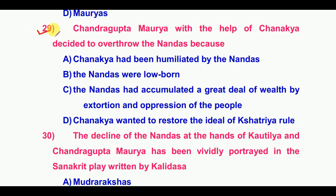Twenty-ninth question: Chandragupta Maurya, with the help of Chanakya, decided to overthrow the Nandas because the Nandas had accumulated a great deal of wealth by extortion and oppression of the people.